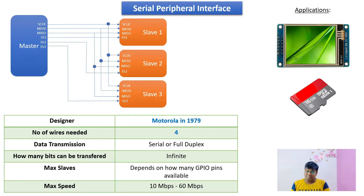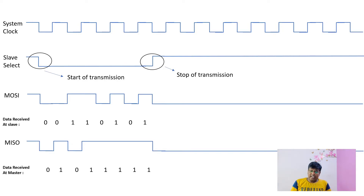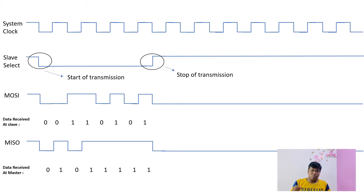Now let's look at the SPI timing diagram. The first waveform is the system clock (SCLK), used for SPI communication. The second waveform is the Slave Select pin, which selects a particular slave and indicates the start and stop of communication. The Slave Select pin is normally high; pulling it from high to low indicates the start of transmission, during which data transfer occurs. Pulling it back from low to high stops the transmission.